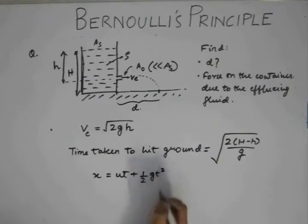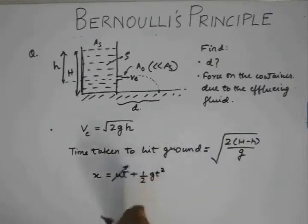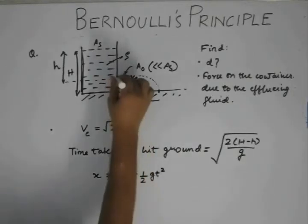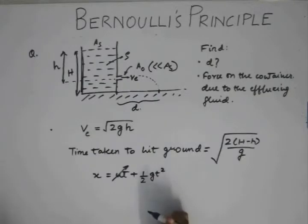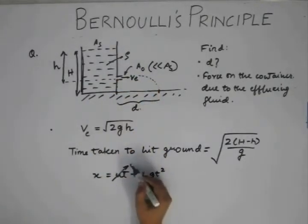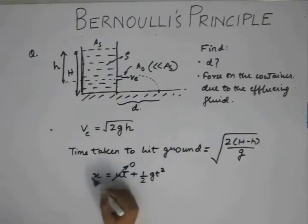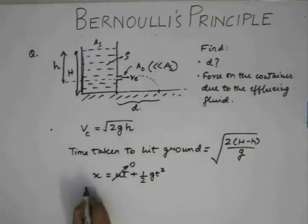that we have X is equal to UT plus half GT square. Considering that the downward direction is positive, we don't have an initial velocity here. I mean, I am considering just at a point here, just inside, and velocity of efflux is here. So this goes to 0.